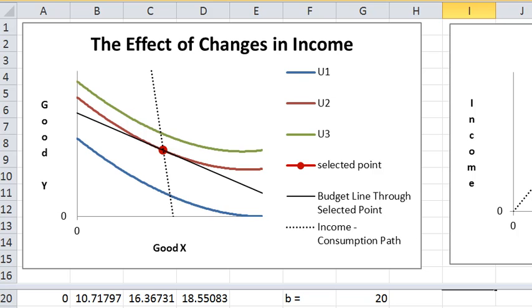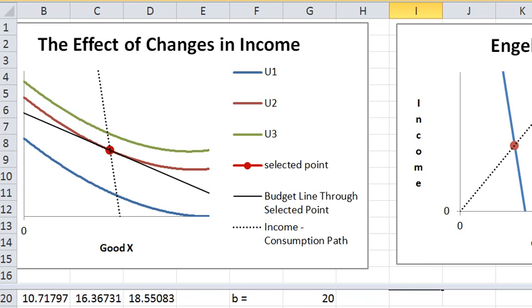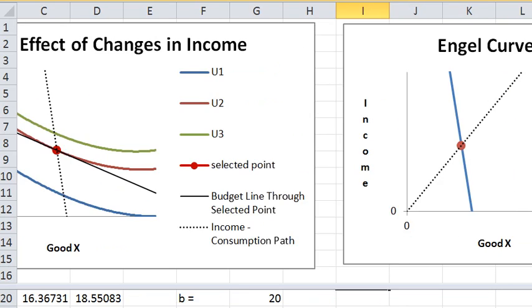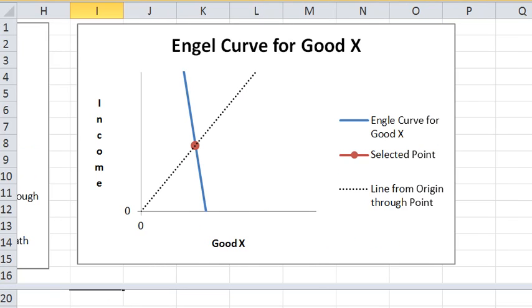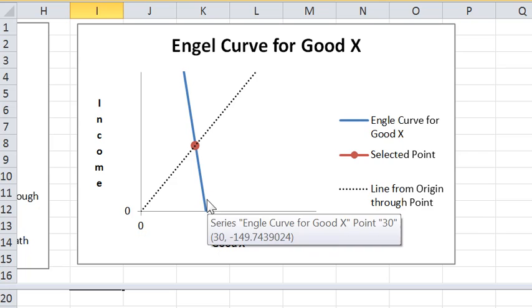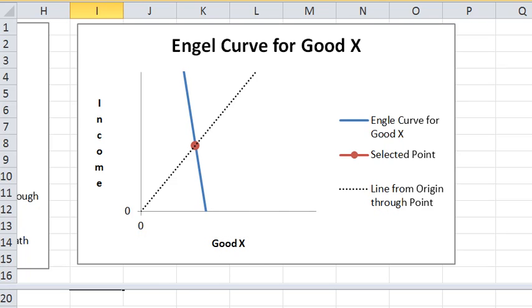The one last thing we would like to look at in here is this other graph, which is the relationship of income and consumption of good X directly. This blue line is called the Engel curve for X. And let's see if I can create movement on the Engel curve by increasing income.